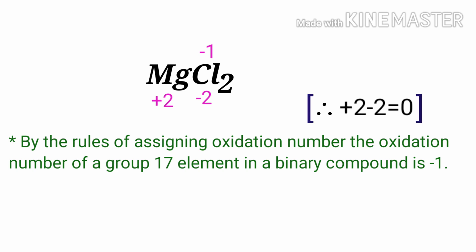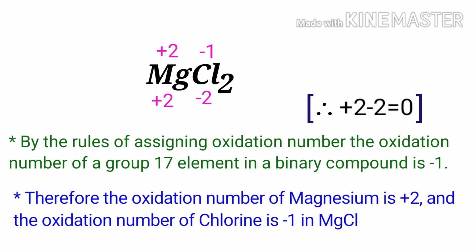So the oxidation number of magnesium is plus two. Therefore, the oxidation number of magnesium is plus two and the oxidation number of chlorine is minus one in Magnesium Dichloride.